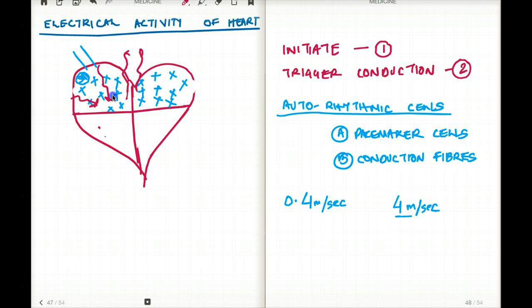It will move inwards and the atria will contract. Now the next stop for this depolarization process is the AV node. Now where exactly is the AV node? If you do a cross-section of the heart, you will see that the AV node is here.